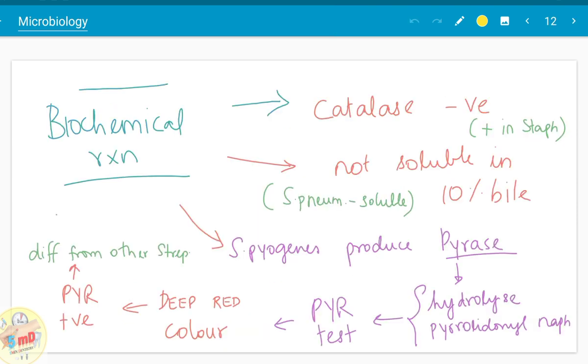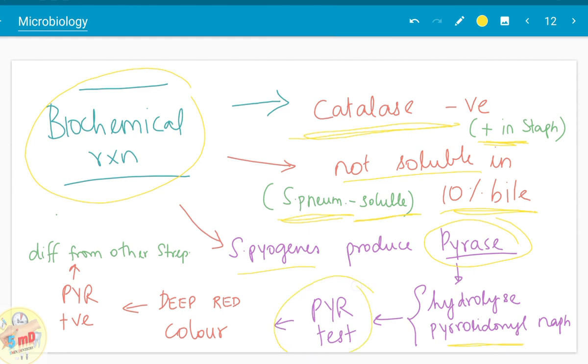The biochemical reactions which are useful in differentiating this Streptococcus pyogenes from other bacteria are enumerated here. Streptococcus pyogenes is catalase negative, whereas the catalase test is positive in Staphylococcus. The Streptococcus strain is not soluble in 10% bile, whereas Streptococcus pneumoniae bacteria is soluble. Streptococcus pyogenes produces PYRase enzyme. PYRase hydrolyzes a particular compound and therefore the PYR test is positive. It produces deep red color and this differentiates it from other streptococci which produce a diffuse orange color.